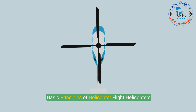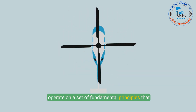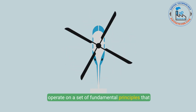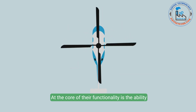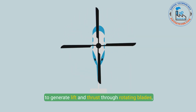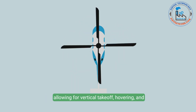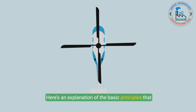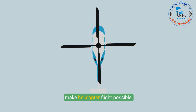Basic Principles of Helicopter Flight. Helicopters operate on a set of fundamental principles that differentiate them from fixed-wing aircraft. At the core of their functionality is the ability to generate lift and thrust through rotating blades, allowing for vertical take-off, hovering, and multi-directional movement. Here is an explanation of the basic principles that make helicopter flight possible.